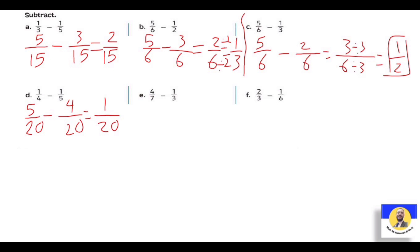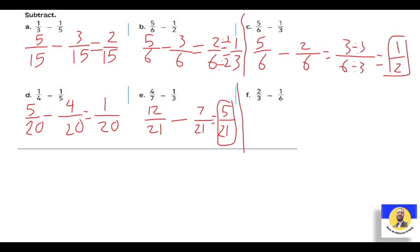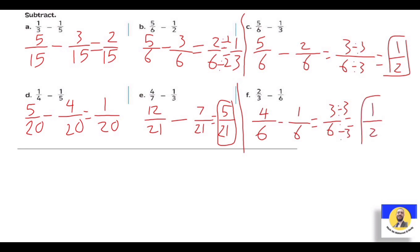The next: 4 over 7 minus 1 over 3. يا ترى نقدر نغير الـ three نخليها seven؟ لأ. وما الاثنين prime numbers - مفيش common بينهم. يبقى 7 × 3 = twenty-one. الـ seven بقت 21: عملنا × 3، يبقى 4 × 3 = twelve. والـ three بقت 21: عملنا × 7، يبقى 1 × 7 = seven. نعمل minus: 12 - 7 = five over twenty-one. Letter F: 2 over 3 minus 1 over 6. نقدر نغير الـ three نخليها six: عملنا × 2. يبقى 2 × 2 = four over six. نعمل minus: 4 - 1 = three over six. Divided by three up and down = one over two.